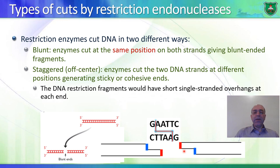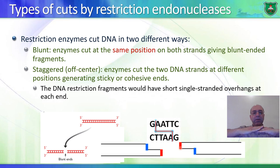The cleavage occurs by breaking the phosphodiester bond, which is a covalent bond and really stable. Hydrogen bonds, however, are reversible. So these two DNA fragments can come back and form hydrogen bonds with each other, but they can also dissociate. These are known as overhangs — sticky ends, cohesive ends, overhangs.